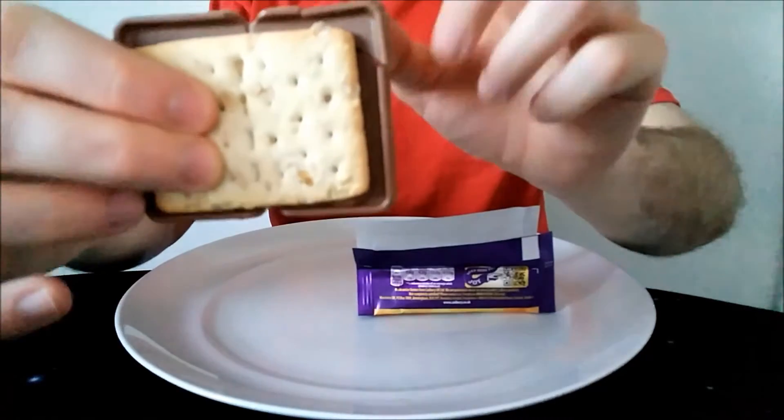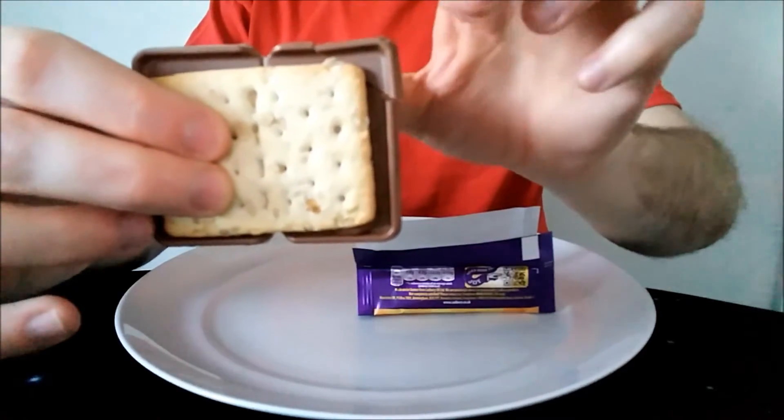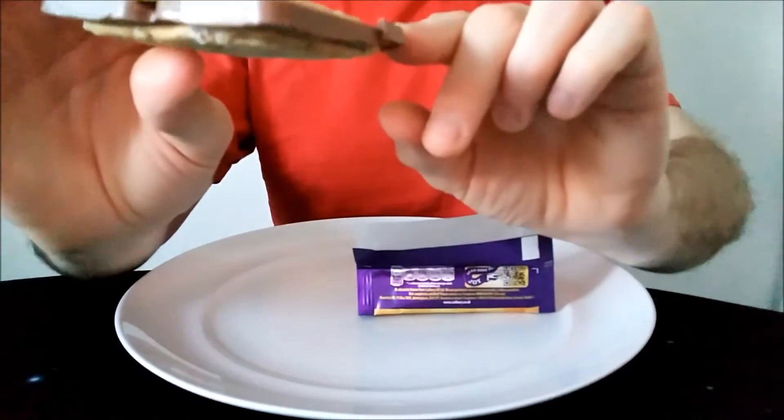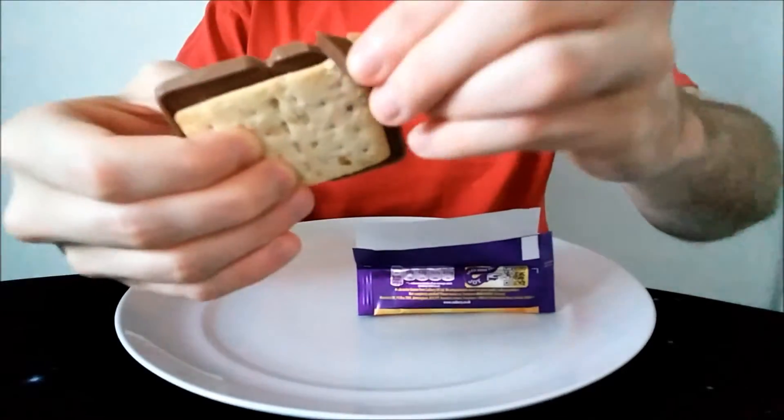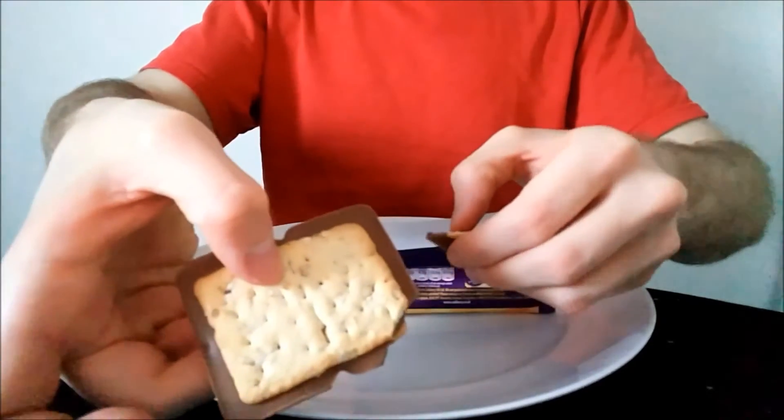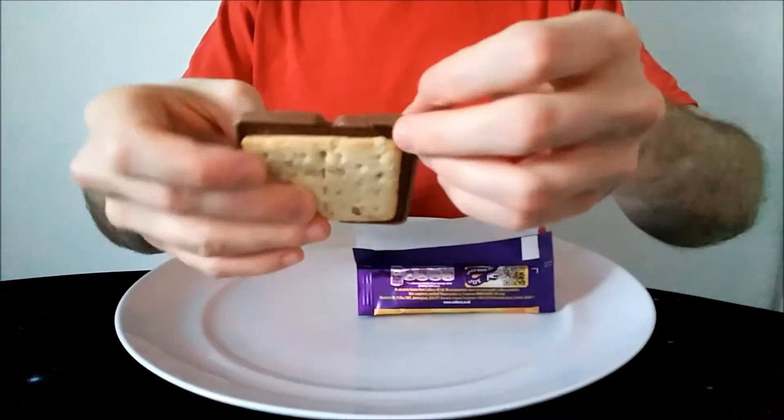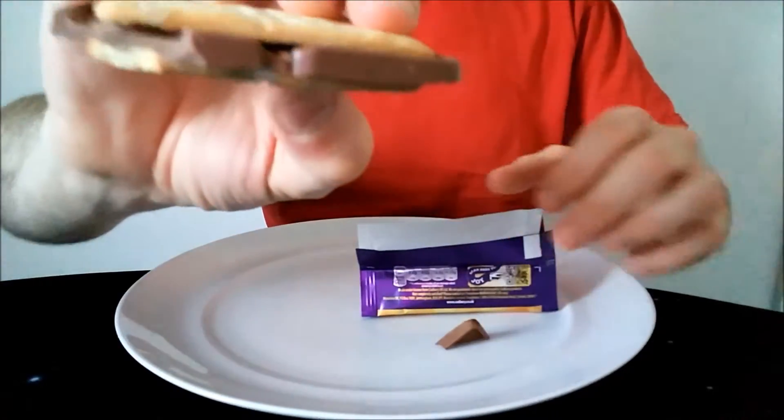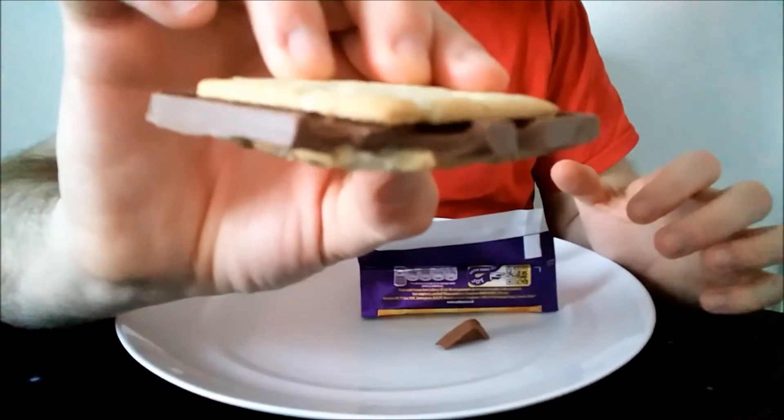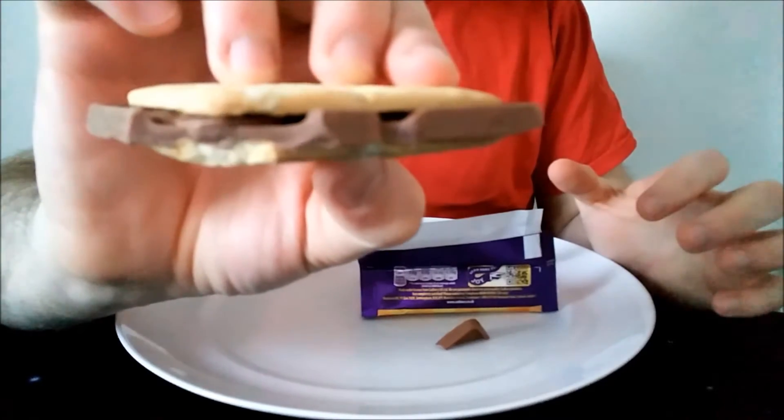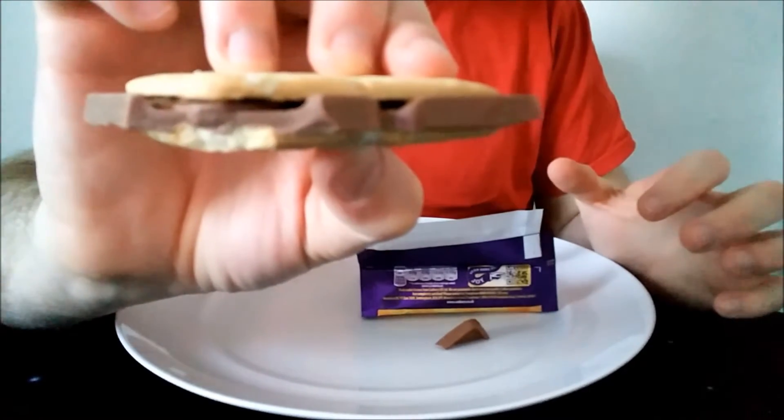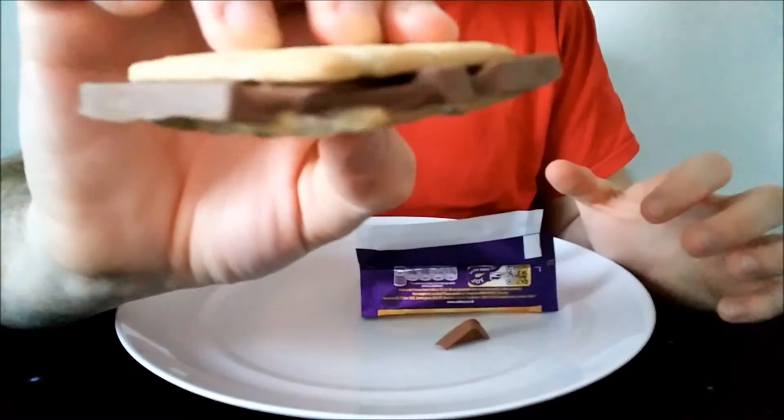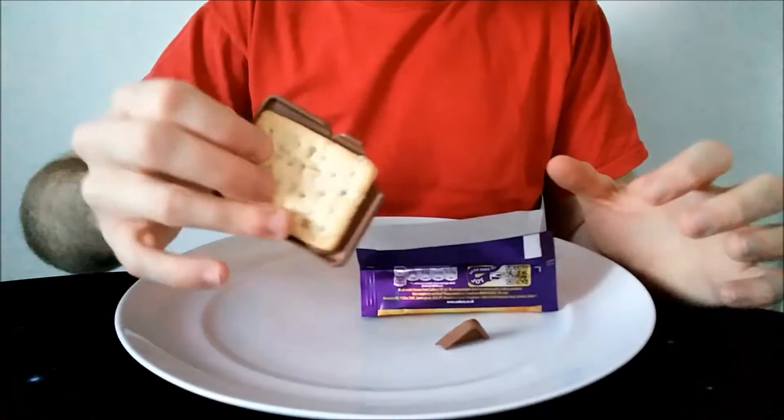It's basically two sort of biscuits with this oat biscuit surrounding a thick dairy milk chocolate. Same on both sides. So yeah, so one bit's just fallen off there. It's basically two biscuits. It's like a sandwich really actually. A chocolate sandwich. And it's very nice actually. It's a lovely idea. I do like it a lot.